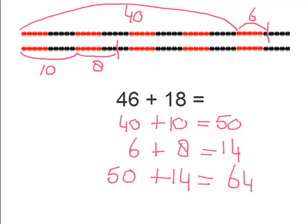So what we have actually done is just split up the numbers 46 and 18 into tens and units. So 46 is 40 and 6, and 18 is 10 and 8. Let's move on and do another problem.